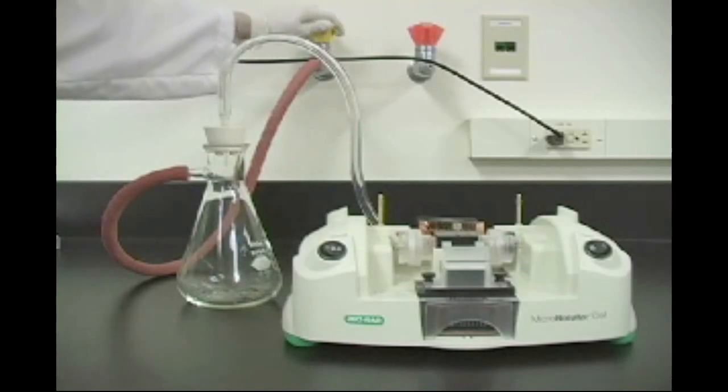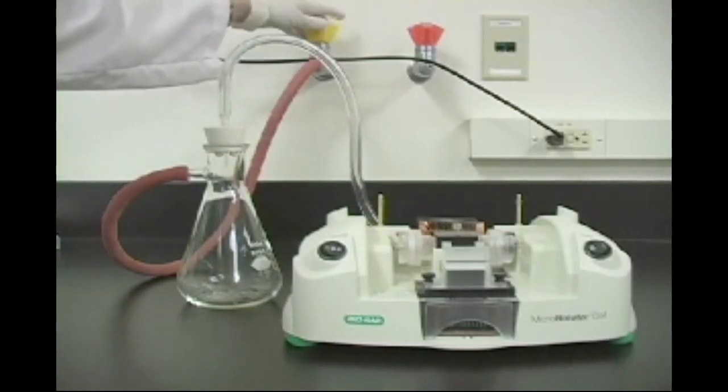Connect the vacuum tubing on the microrotifor cell to a vacuum source. Apply a vacuum to the chassis.